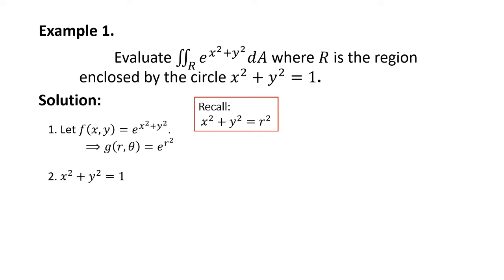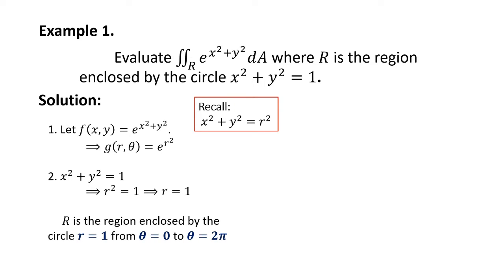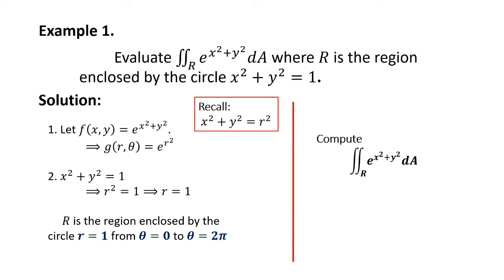For the region R, we have x² + y² = 1. Since x² + y² is r², we'll just have r² = 1, which is simply r = 1. So our region R is imposed by the circle r = 1 and θ from 0 to 2π. We'll have the double integral of e^(r²) · r dr dθ, from r = 0 to r = 1, and from θ = 0 to θ = 2π.